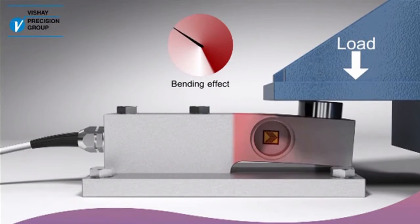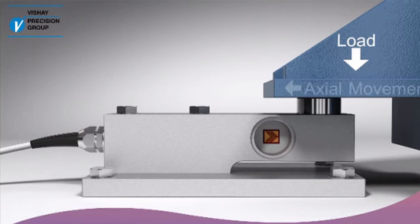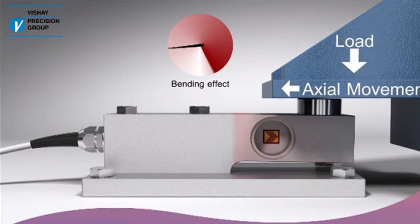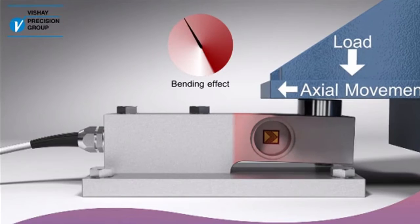In a real process weighing application, however, the bending effects can change unpredictably due to thermal or structural movement. These additional strains result in measurement errors.